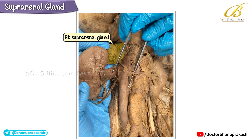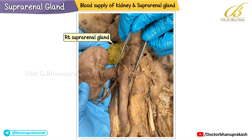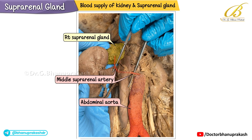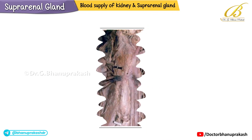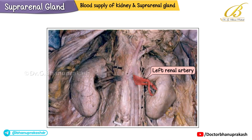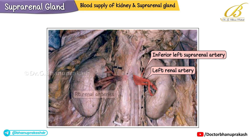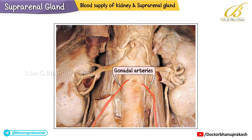This illustration shows the blood supply of the kidney and the suprarenal gland. On the right side, the middle suprarenal artery arises as a direct lateral branch of the abdominal aorta. On the left side, the left renal artery gives off the inferior left suprarenal artery. The right and left renal arteries both originate from the abdominal aorta, as can be seen in this image. Both gonadal arteries also arise from the abdominal aorta.